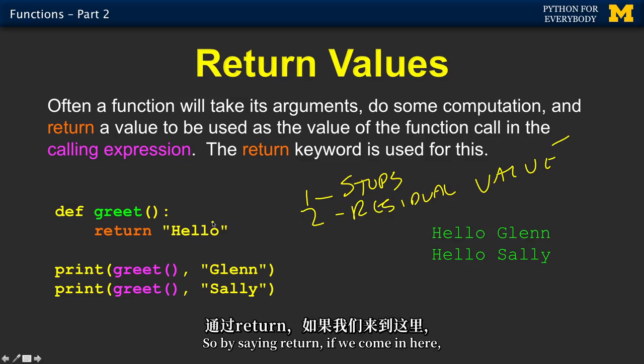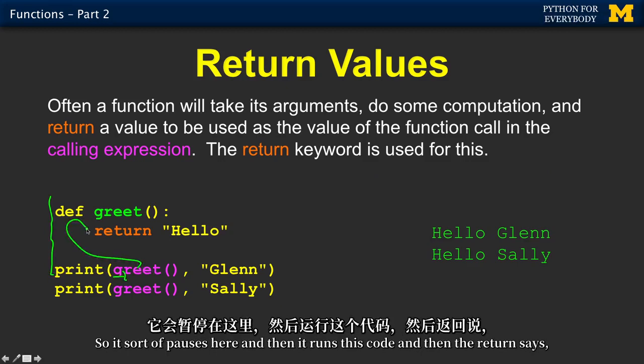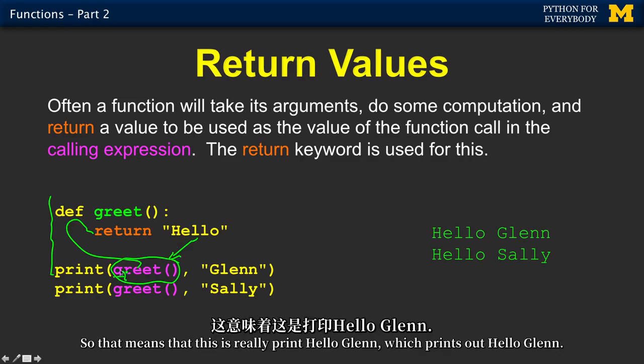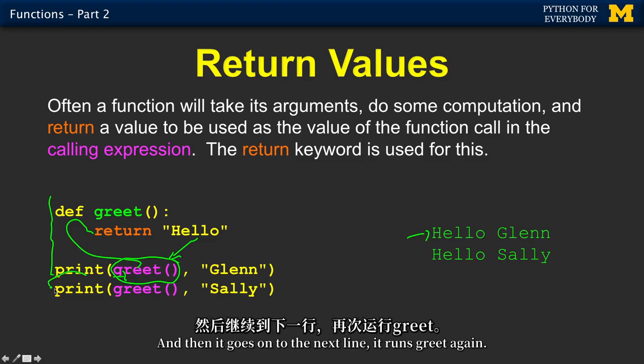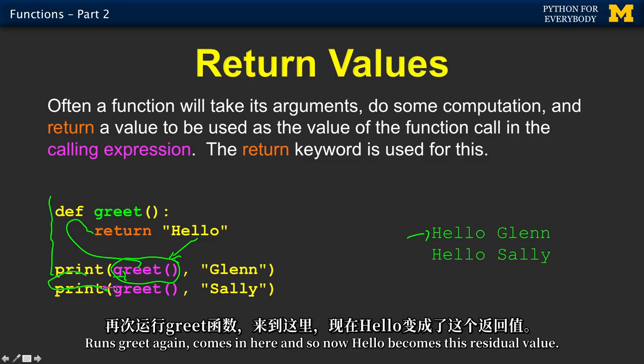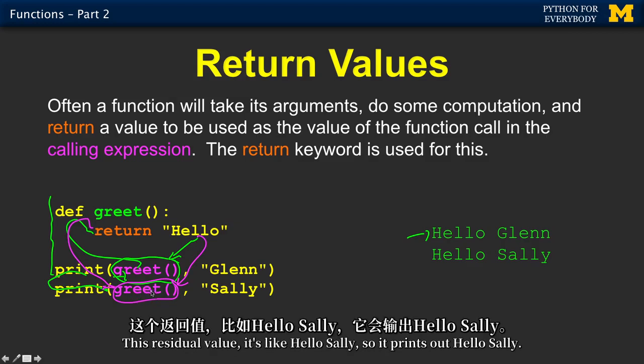So by saying return, if we come in here and so we do this, then we're in the middle of this print statement. So it sort of pauses here. And then it runs this code. And then the return says, oh, this little bit that was the function, send that back right there. So that means that this is really print hello Glenn, which prints out hello Glenn. And then it goes on to the next line. It runs greet again. Runs greet again. Comes in here. And so now hello becomes this residual value. Now it's not very clever, but you get the idea. This residual value. It's like hello Sally. So it prints out hello Sally.